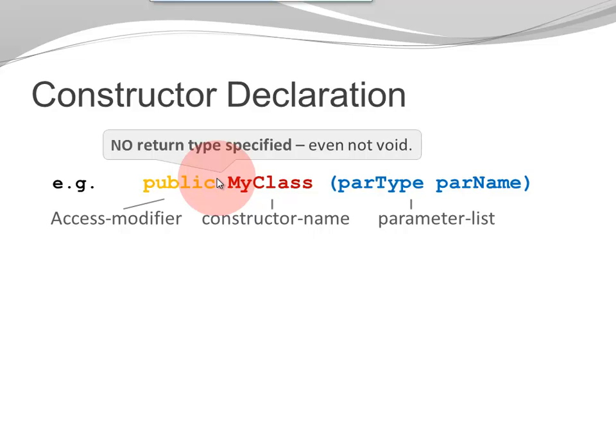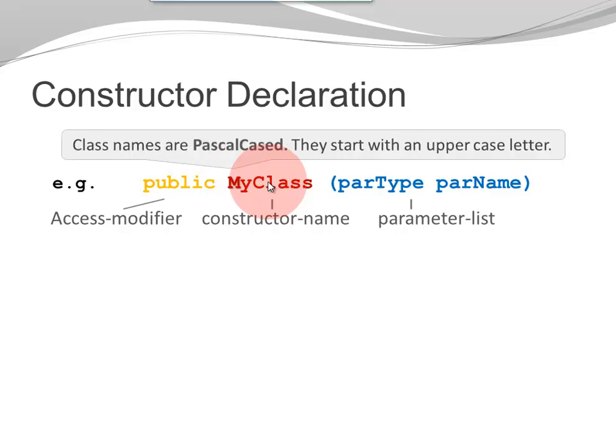If a return type was specified, Java would no longer recognize it as the constructor. It would consider it to be a method. That's something you want to avoid. Now here is the name of my constructor. Notice the uppercase M of MyClass. The reason my constructor name is Pascal-Cased is because constructor names always match the class names. And class names are Pascal-Cased. So are constructor names.